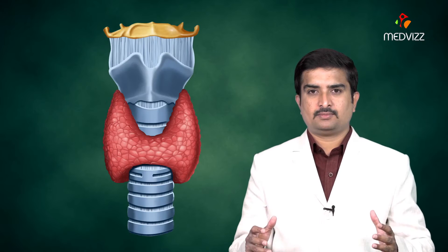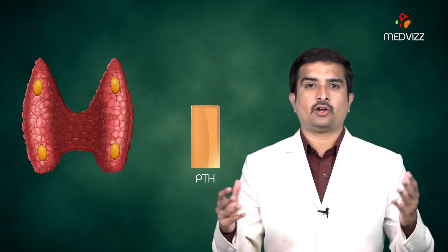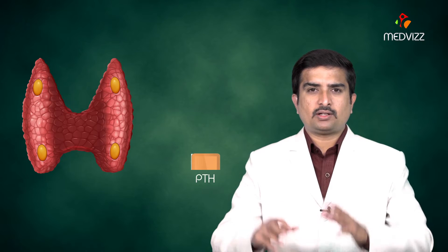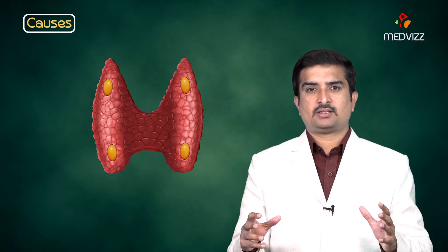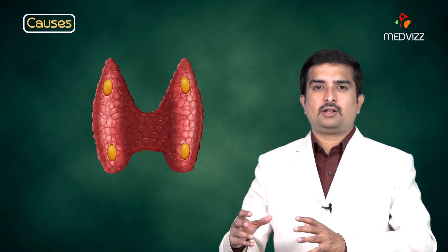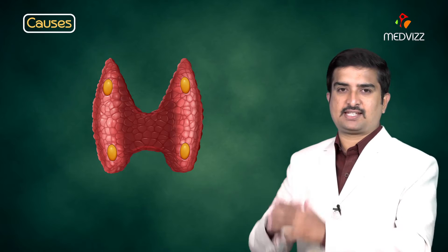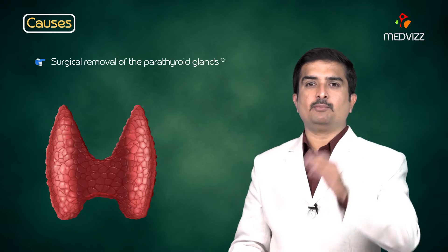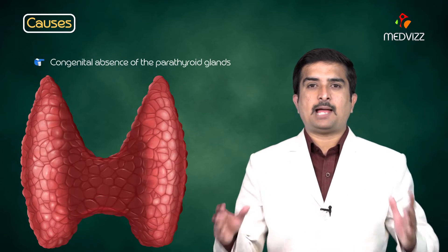Hypoparathyroidism is an uncommon condition where the patient's body secretes abnormally low levels of parathyroid hormone. The most important causes of decreased parathyroid states: surgical removal of the parathyroid glands is the most common cause in adults. Other causes include congenital absence of the parathyroid glands.